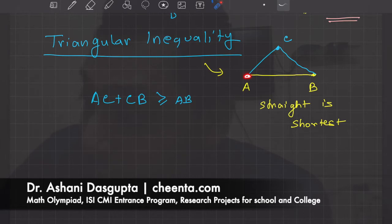If you go directly to B, of course going directly to B will be shorter. Saying that in a more formal way is triangular inequality. So we will be using triangular inequality to solve this problem.